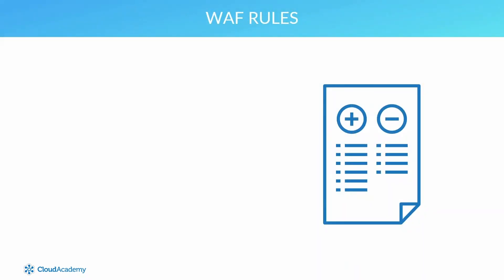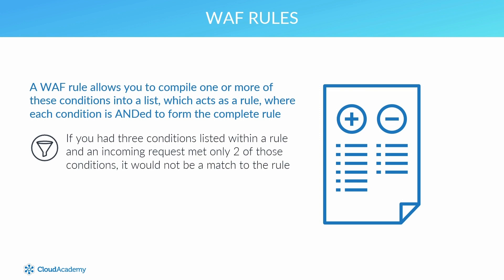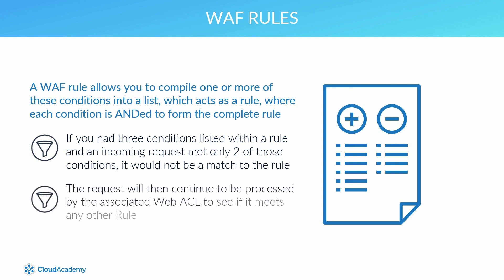AWS rules: you then need to add these conditions to a rule. A WAF rule allows you to compile one or more of these conditions into a list, which acts as the rule, where each condition is ANDed to form the complete rule itself. For example, if you had three conditions listed within a rule and an incoming request met only two of those conditions, it would not be a match to that rule — it would have to meet all three conditions. The request will then continue to be processed by the associated web ACL to see if it meets any other rule. This gives you fine-grained control of very specific source targets.